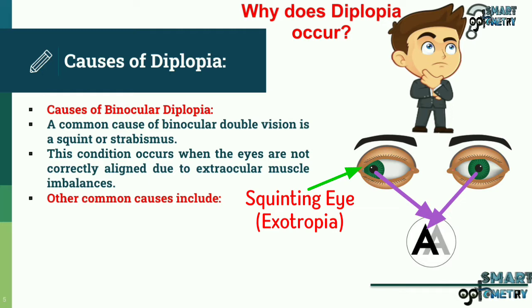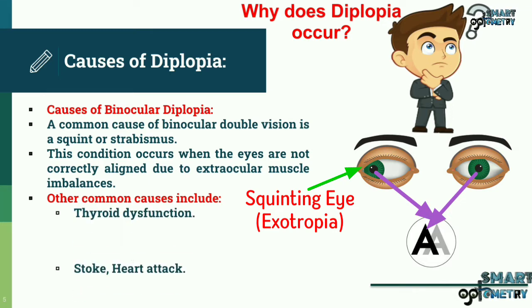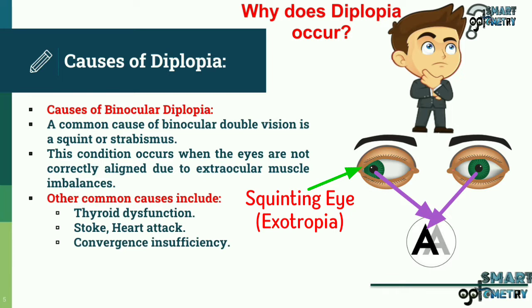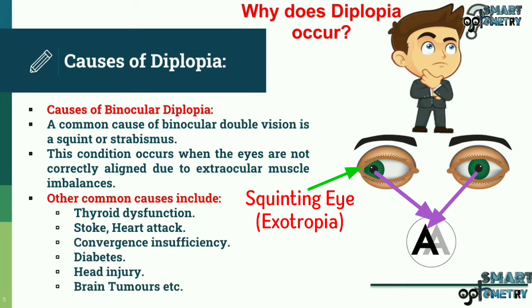Other common causes of binocular diplopia include thyroid dysfunction, stroke, heart attack, convergence insufficiency, diabetes, head injury, and brain tumours.